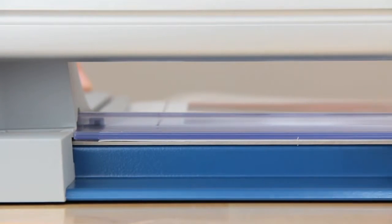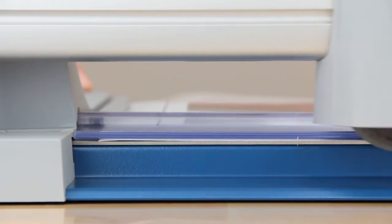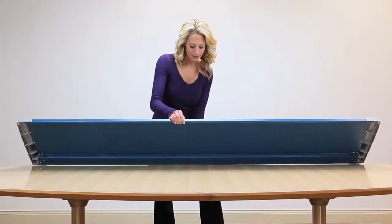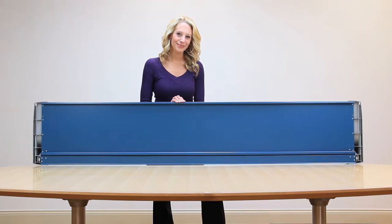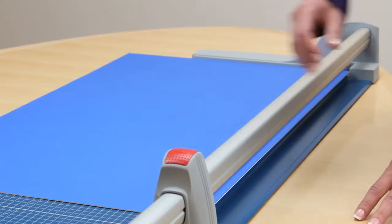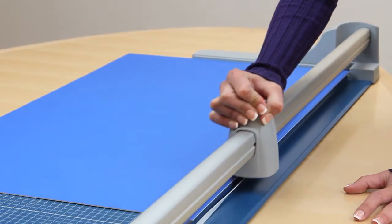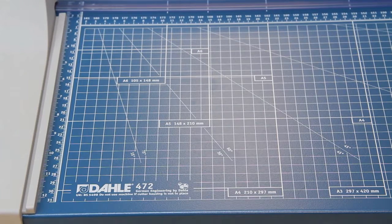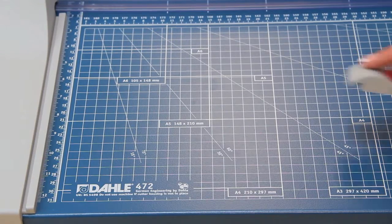For durability, the 472 features a sturdy metal base designed to provide a solid foundation for rigorous use day in and day out. For measuring, this base contains carefully screened guides and an adjustable backstop.